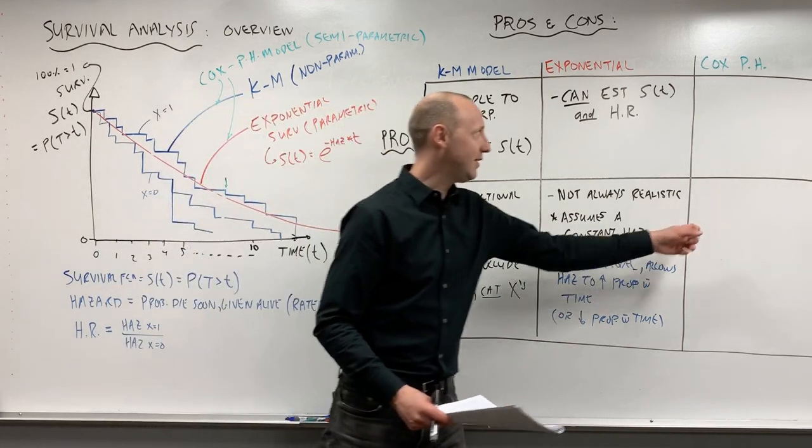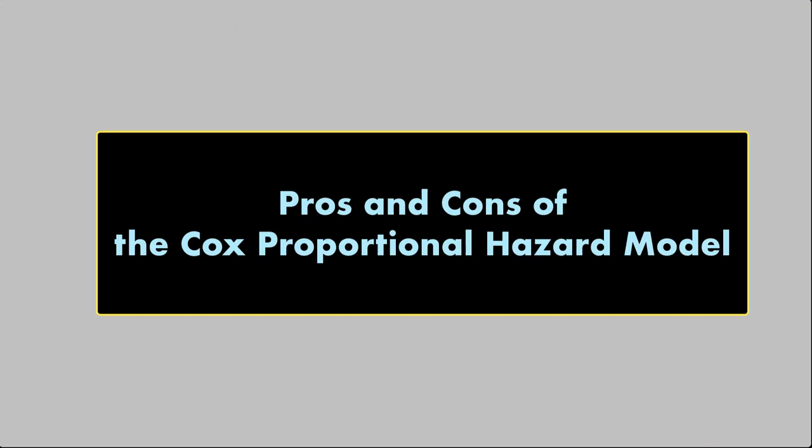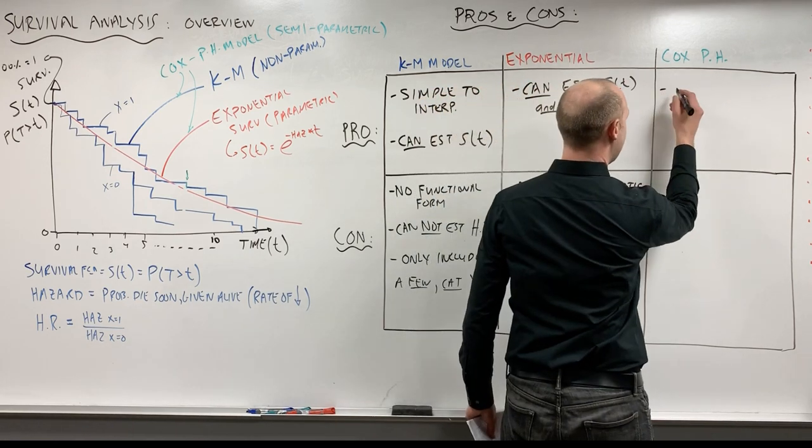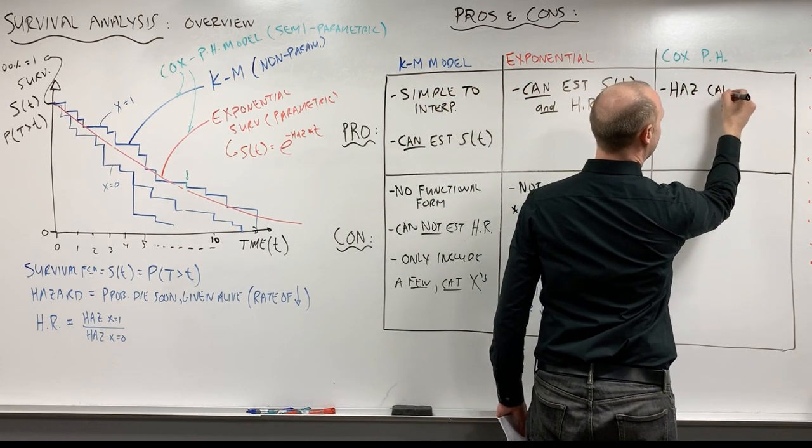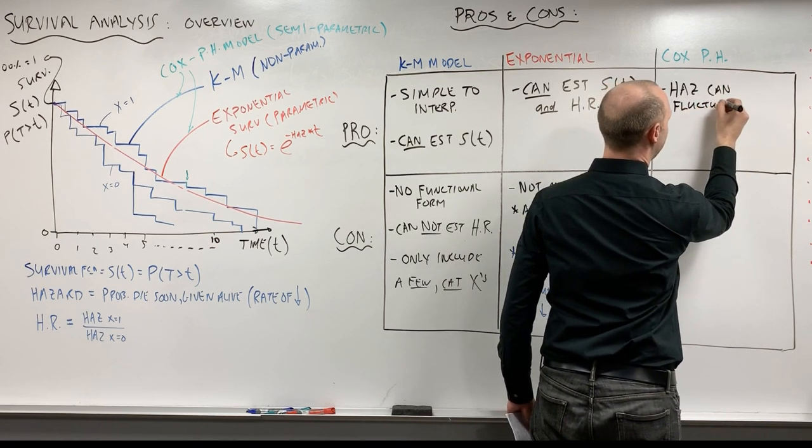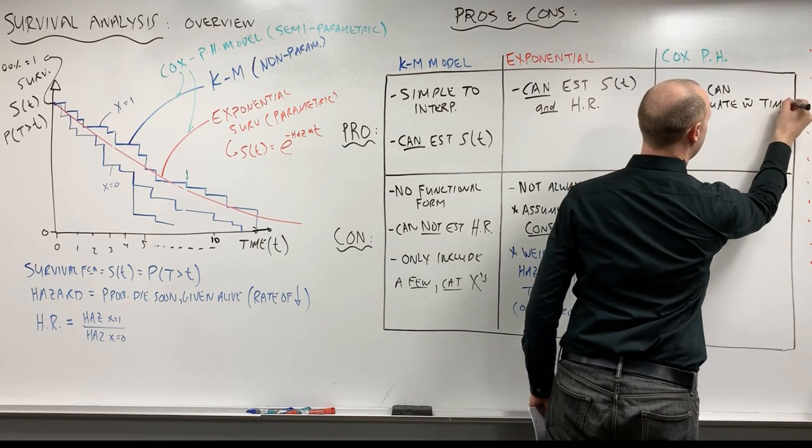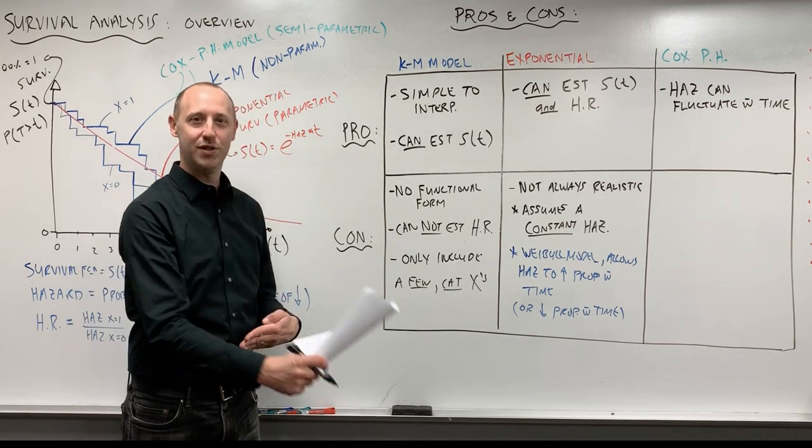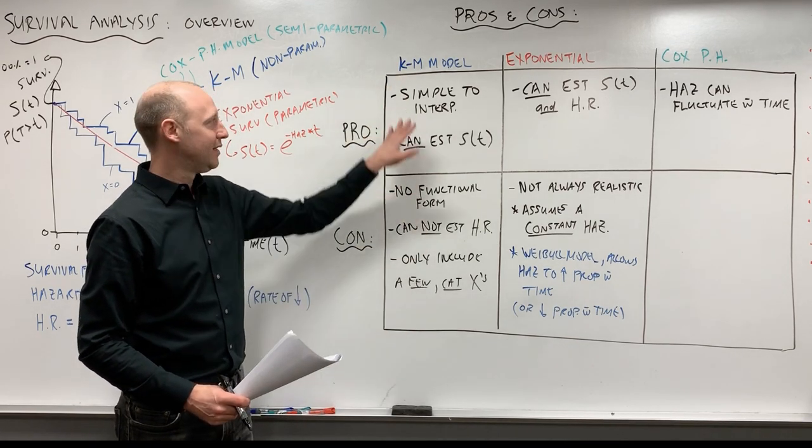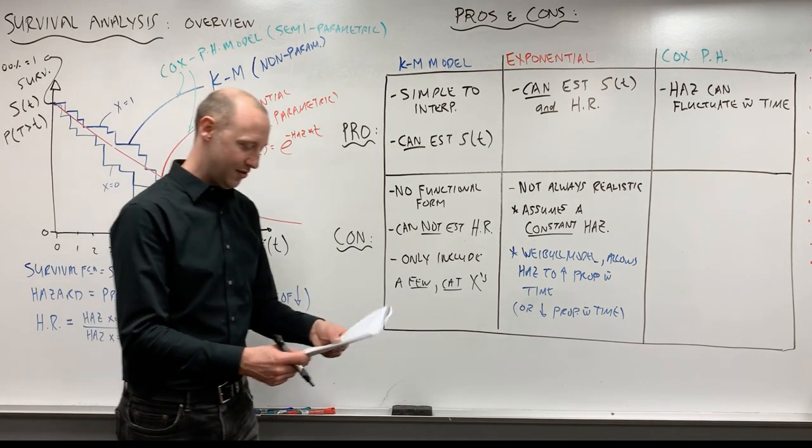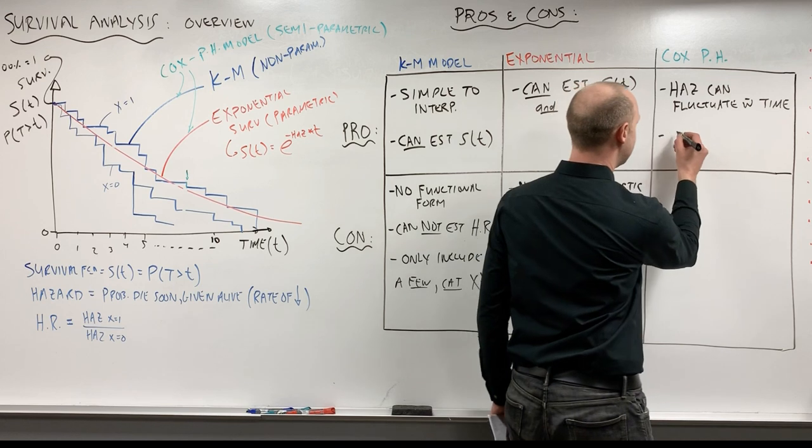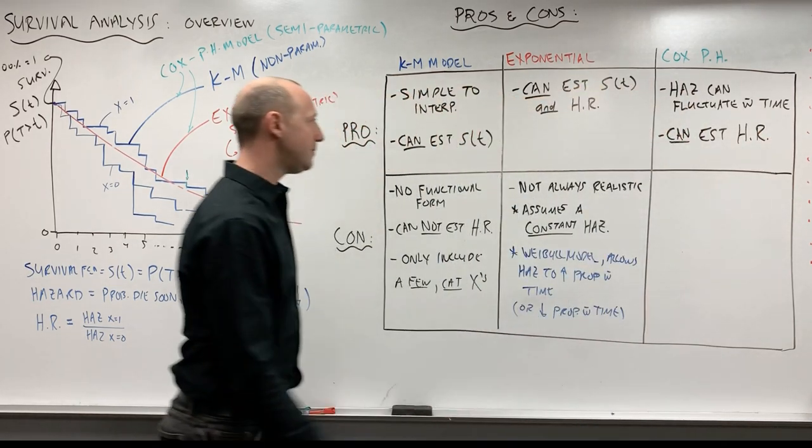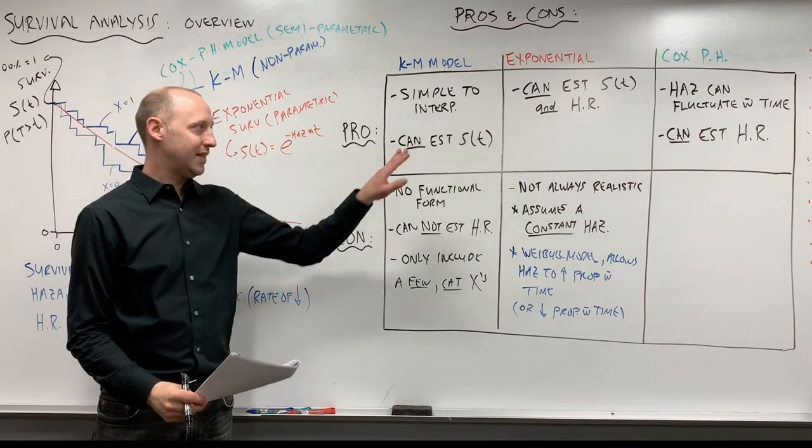So that leads us into the Cox proportional hazard model. The biggest pro of this is that the hazard can fluctuate with time. Meaning that the hazard can increase or decrease as time goes by. It can be quite large at some points, quite small at some points. So it kind of captures what Kaplan-Meier does - it allows the hazard to fluctuate as time goes by. But the nice thing with it is that you can estimate the hazard ratio. So it does allow you to estimate a hazard ratio.